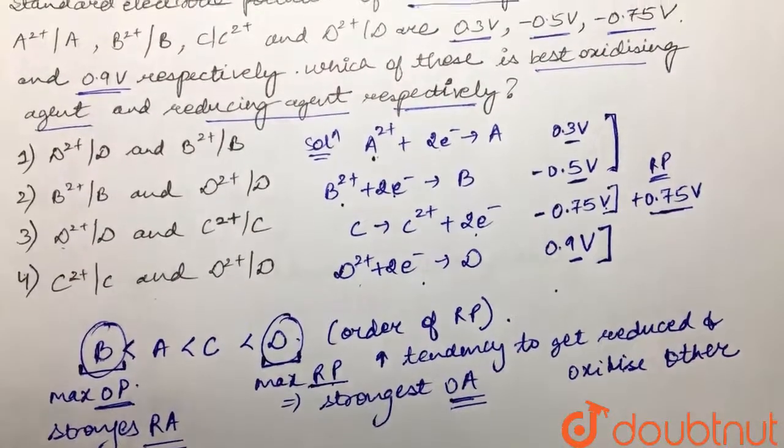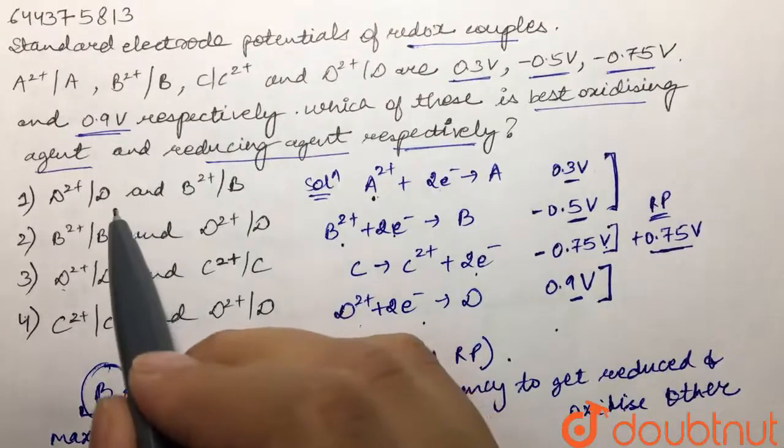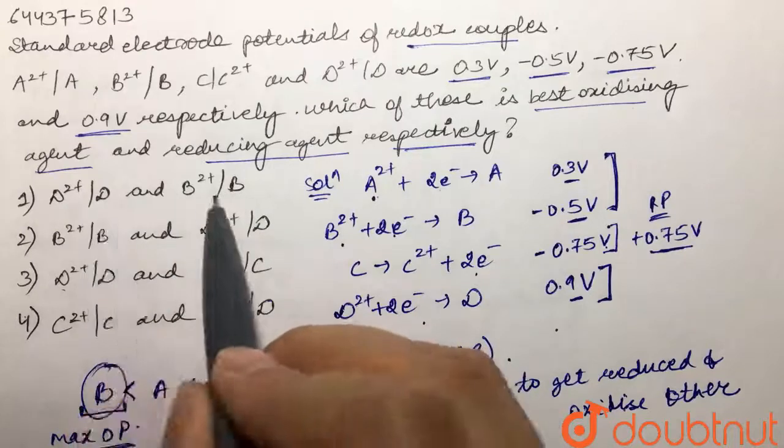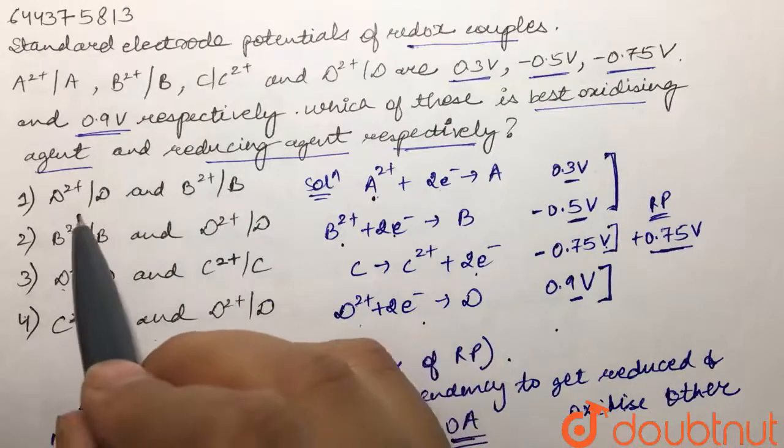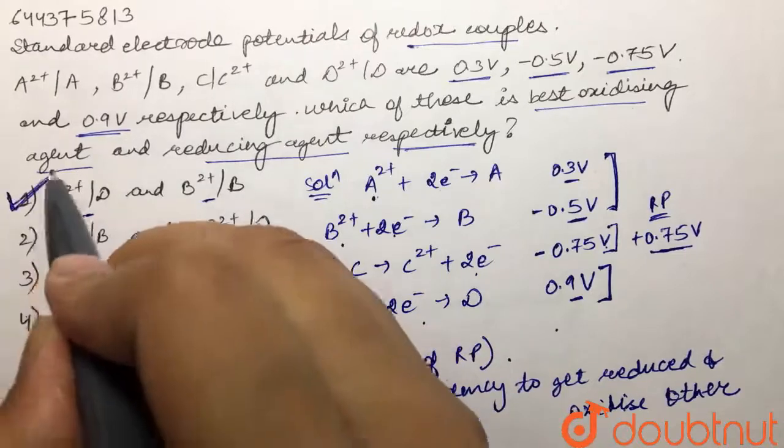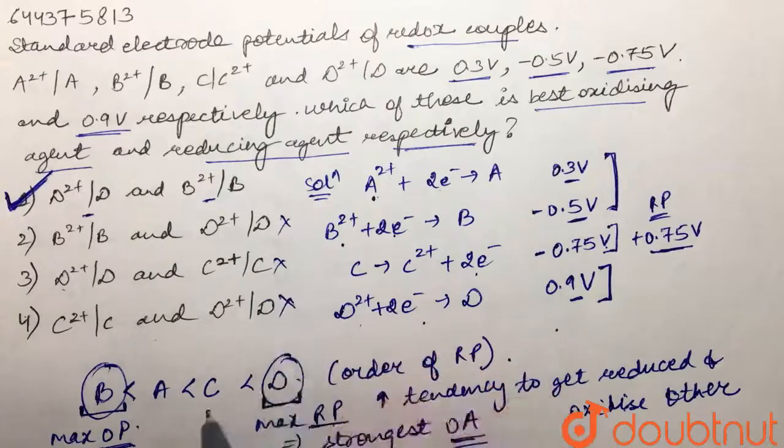So what would be our answer? D and B redox couple. So D and B redox couple is given in option number 1 only. These are the redox couples which are acting as best oxidizing agent and best reducing agent respectively. So our answer to this question would be first. This is our answer.